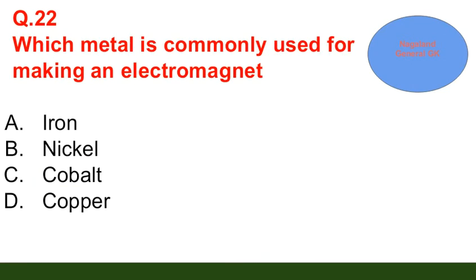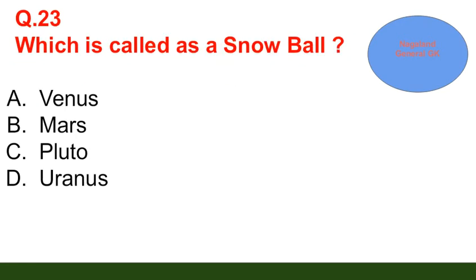Question number 22: Which metal is commonly used for making an electromagnet? Option A: iron. Question number 23: Which planet is called a snowball? Option A: Venus; option B: Mars; option C: Pluto; option D: Uranus. The correct answer is option C — Pluto.